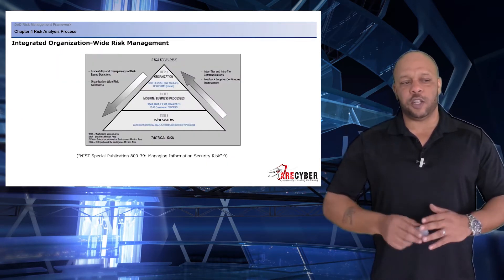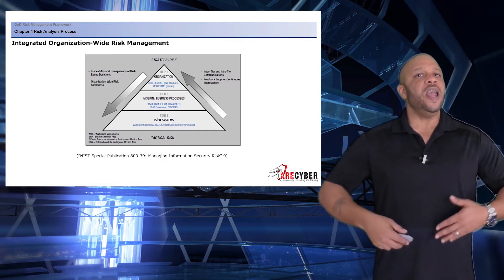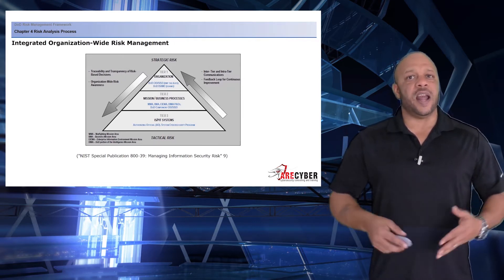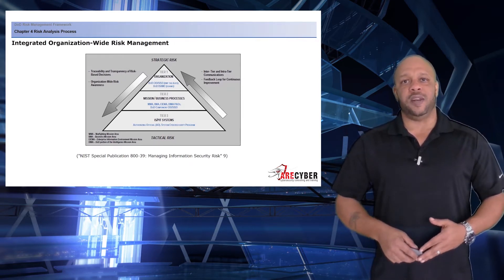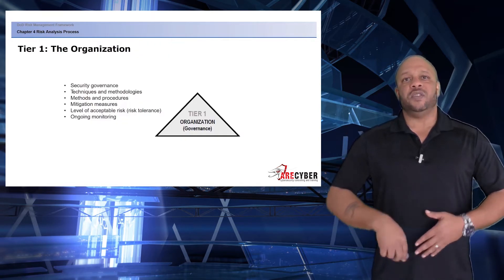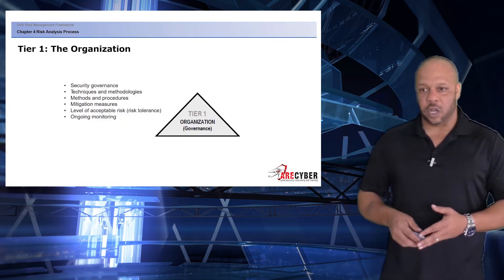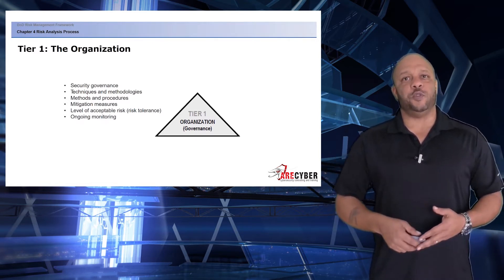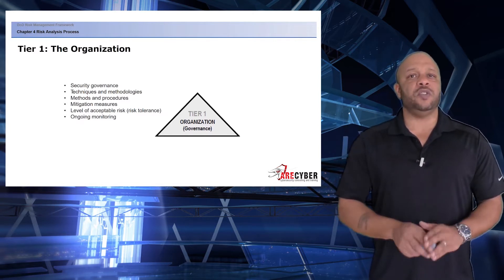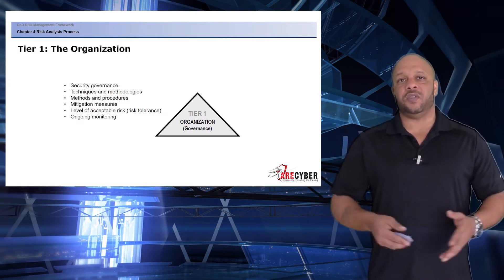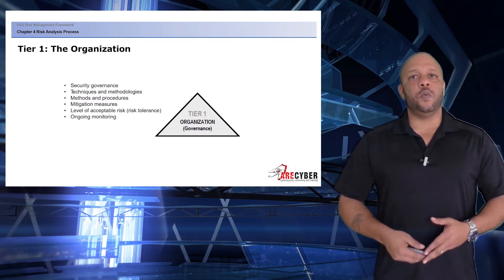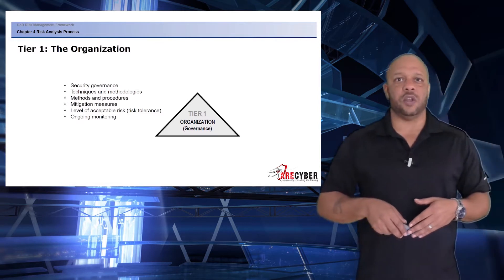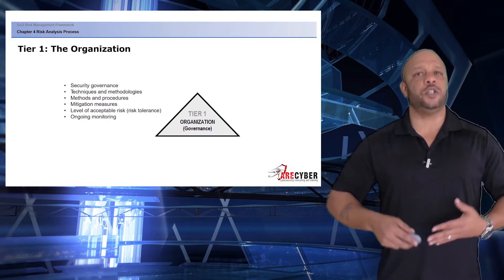The risk management framework takes a three-tiered model towards integrated organization-wide risk management, detailed in NIST Special Publication 839. Starting with Tier 1, the organization — this is where the specific techniques and methodologies for risk management are managed. Tier 1 manages the methods and procedures, as well as mitigating measures, sets the overall risk tolerance for the organization, and ensures ongoing continuous monitoring.